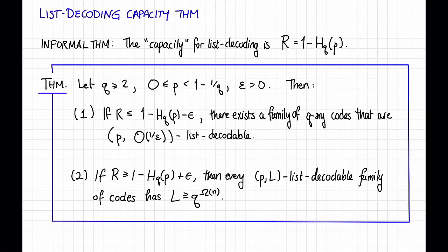So we've just shown the list decoding capacity theorem. The list decoding capacity theorem tells us the right trade-off between the rate r and the error radius p for list decoding, assuming the list size is a large enough constant. However, the proof was definitely not constructive and does not come with efficient algorithms. In the next video we will start to address the question of how we can achieve this, or at least something non-trivial, with explicit constructions.